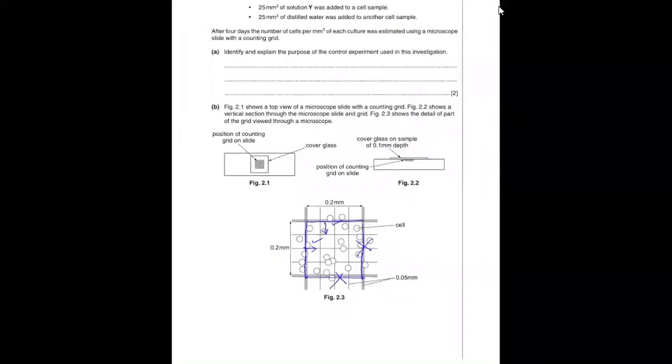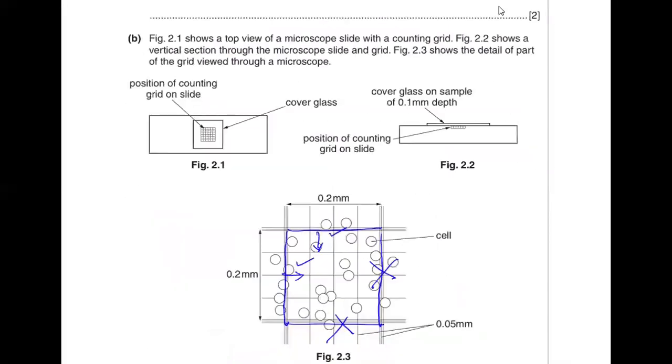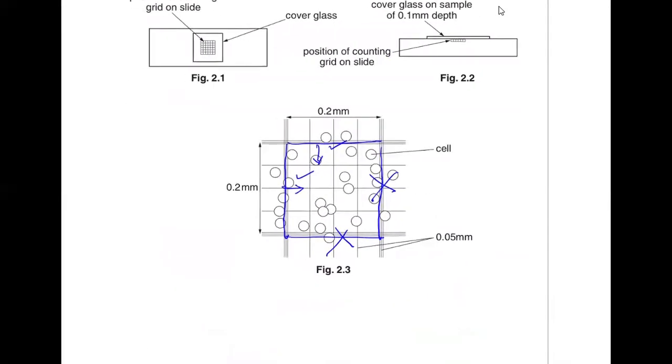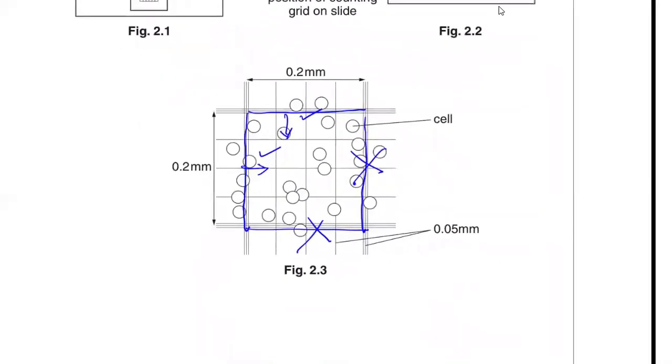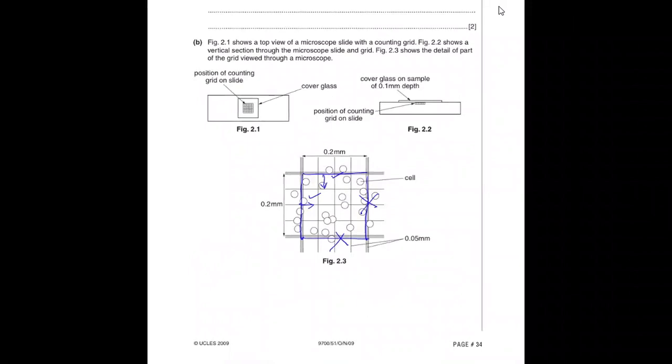In this question, they have not given any dilution. They told you cells were calculated but no dilution factor. So we won't multiply by any dilution factor. In the other question I discussed, the dilution factor was provided. You should know how the hemocytometer grid is used for cell counting. I hope this video was helpful for you. Do share your comments in the section below. That's all from my side. Thank you so much.